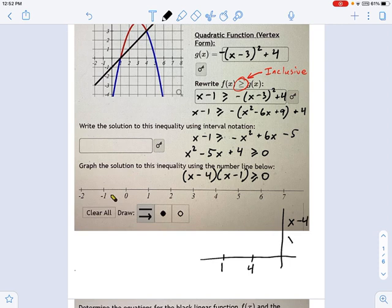So x minus 4, x minus 1. It doesn't matter the order you put the factors in. But you have to know where they're positive and negative. So x minus 4 is going to be positive above 4 and negative below 4. And x minus 1 is going to be positive if you're above 1 and negative if you're below 1.